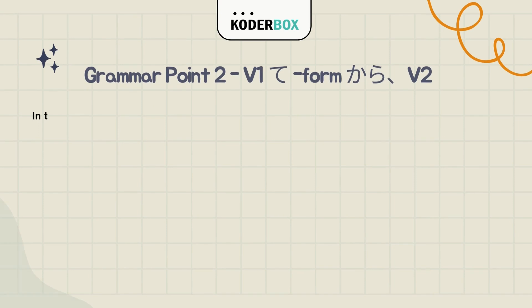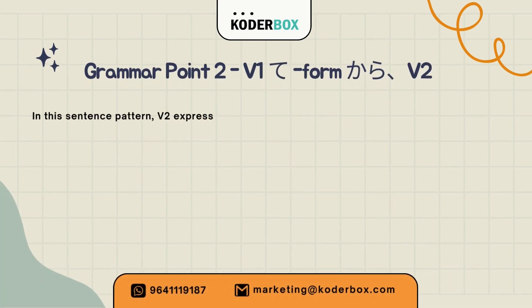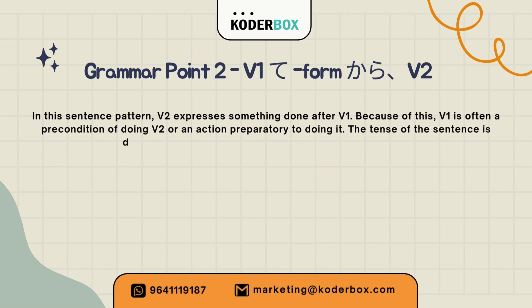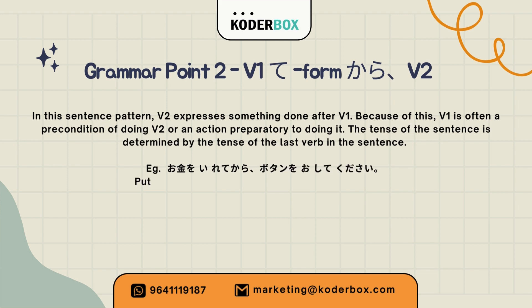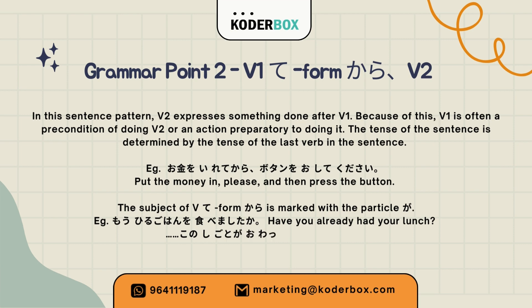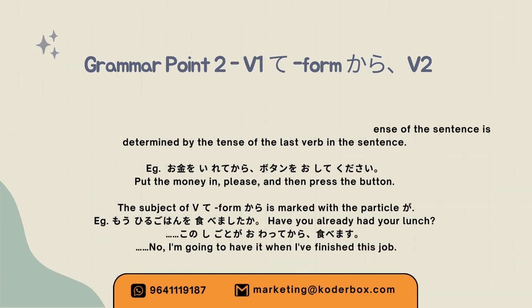Grammar Point Two: Verb 1 Te-form kara, Verb 2. In this sentence pattern, Verb 2 expresses something done after Verb 1. Verb 1 is often a precondition for doing Verb 2. The tense is determined by the last verb. Example: Put the money in and then press the button. Moo hiru gohan wo tabemashita ka? Have you already had your lunch? Kono shigoto ga owatte kara tabemasu. No, I am going to have it when I finish this job.